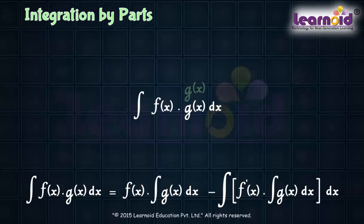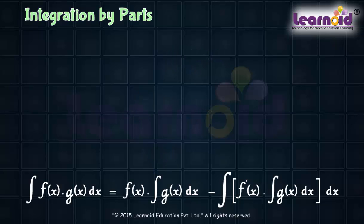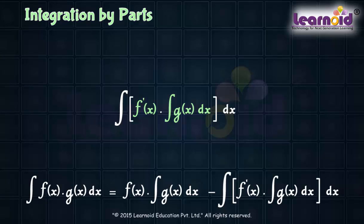This involves integral of second function and differentiation of first function. So identification of first and second function is important. The second term involves product of differentiation of first and integration of second function. So choose first function such that its differentiation will simplify the integration.